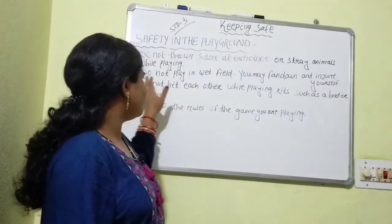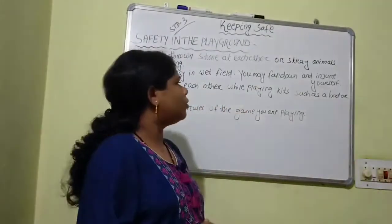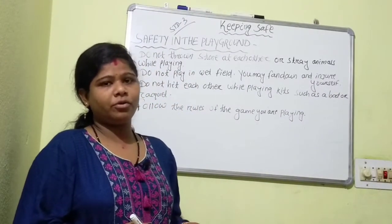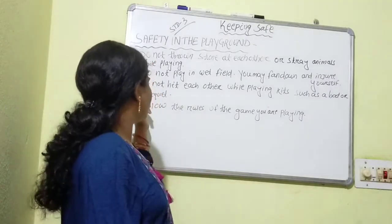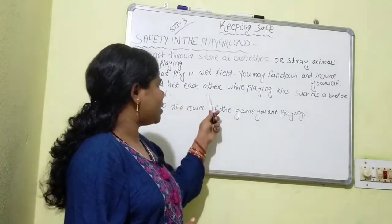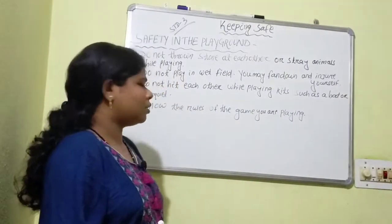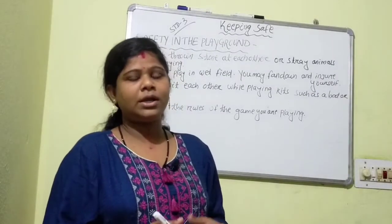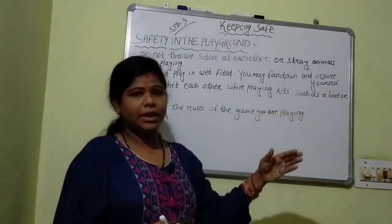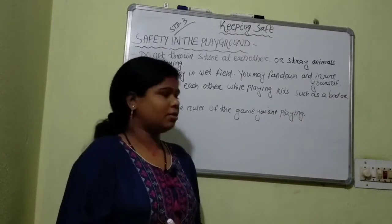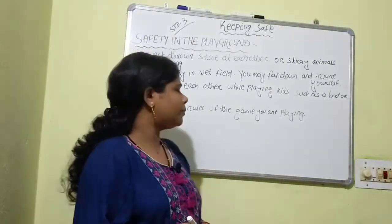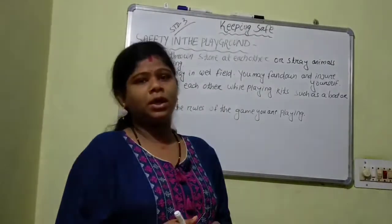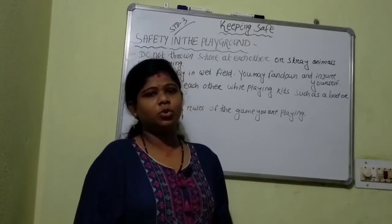Do not play in a wet field — you may fall down and injure yourself, as you may slip and fall. Do not hit each other while playing with equipment such as a bat or racket. While playing in the playground, do not hit at each other with playing equipment like bats and rackets. Also, follow all the rules of the game you are playing.